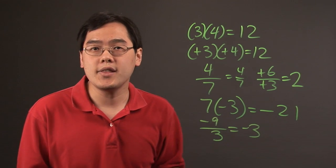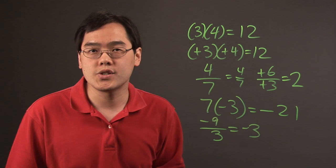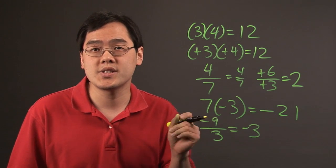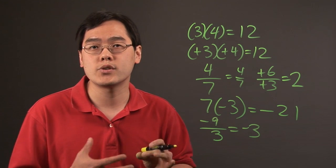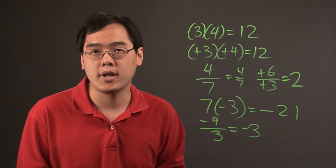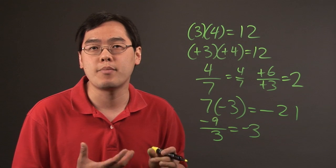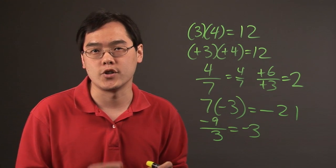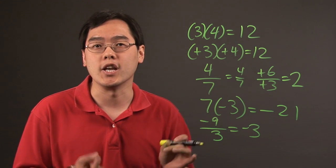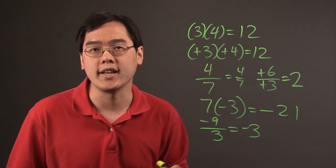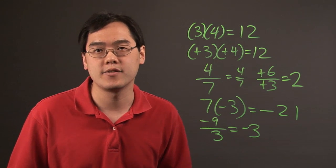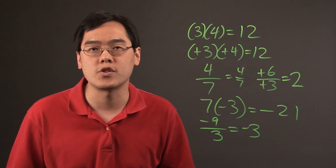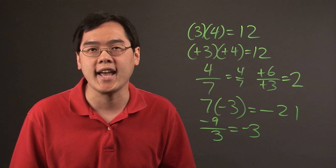So the two things to consider are: if the signs are the same for both numbers, the result when multiplying or dividing is positive. But if the signs don't match for the two numbers, the end result for multiplying or dividing is going to be negative. I'm Jimmy Chang, and that's negative and positive rules for multiplication and division.